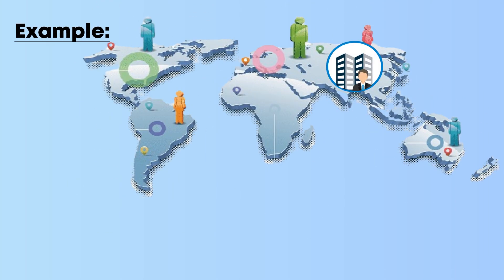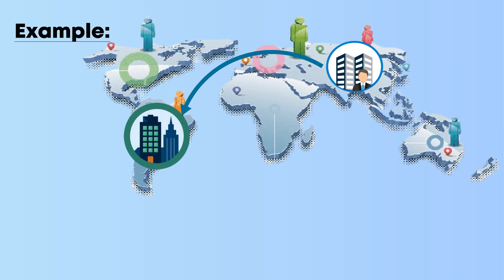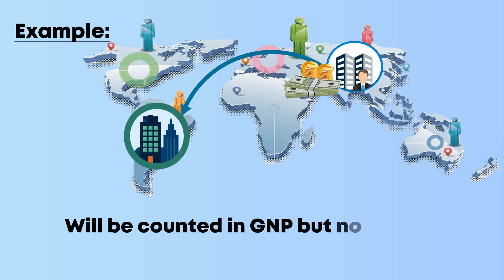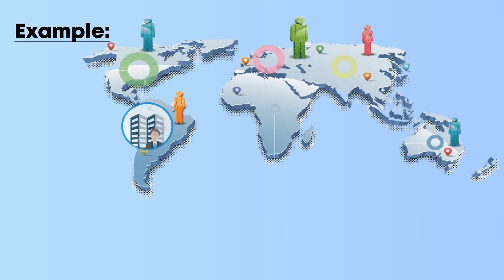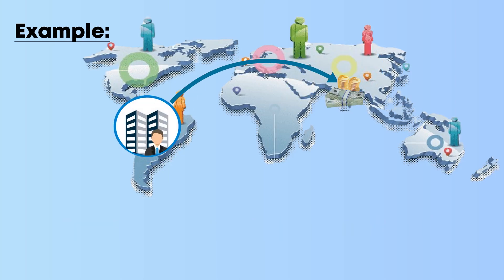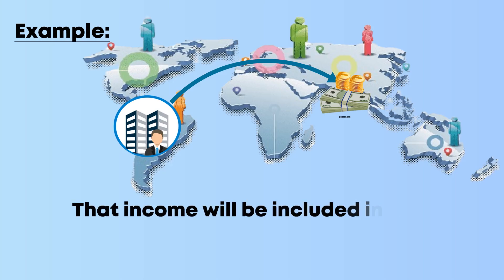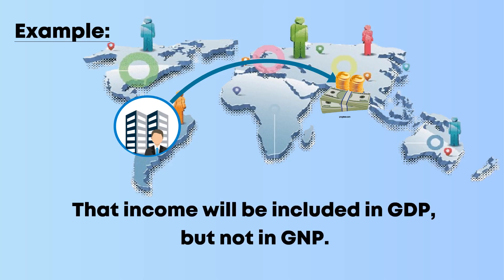For example, if a country's citizens or corporations own companies or investments abroad, the income from those sources will be counted in GNP but not in GDP. Conversely, if foreign companies are earning money within the country, that income will be included in GDP but not in GNP.